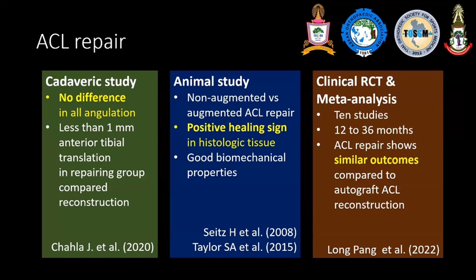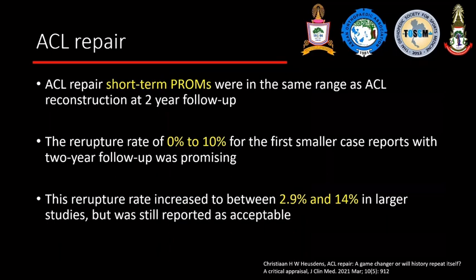ACL repair has been proven in many aspects. In cadaveric and mechanical studies, they compared and found no difference in terms of anterior translation as compared to reconstruction. In animal studies, biologic augmentation showed that positive healing sides have been documented, and clinical RCT and meta-analysis are also promising. Short-term patient-reported outcome measures were in the same range as ACL reconstruction at two-year follow-up.